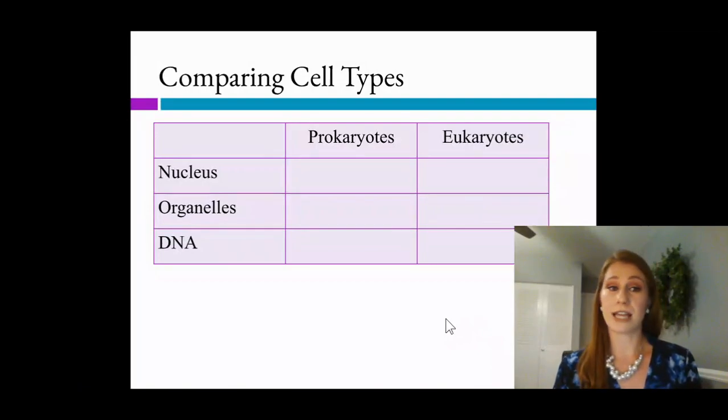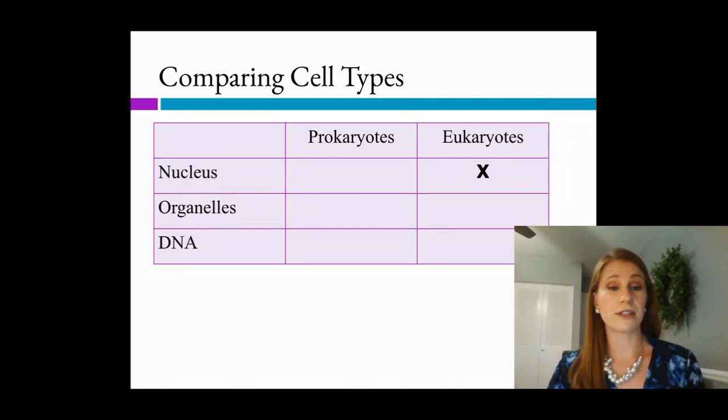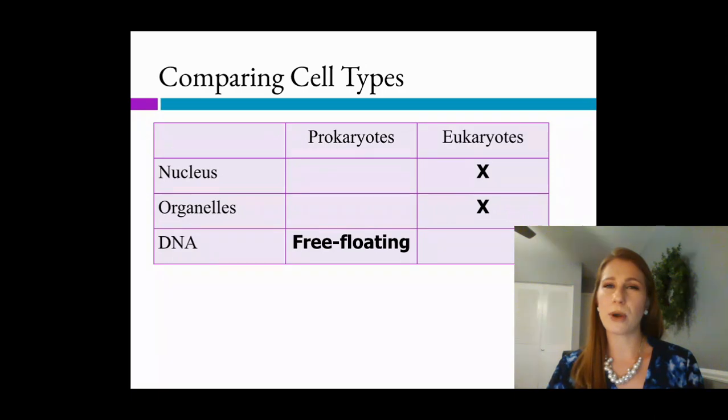Now we're going to compare the cell types. Again, some of us are more graphical learners, we like to have things organized. So we've got prokaryotes versus eukaryotes, and which one has a nucleus, organelles, or DNA? Eukaryotes have a nucleus, eukaryotes have organelles, and the DNA in prokaryotes is free-floating, while the DNA in eukaryotes is in the nucleus.